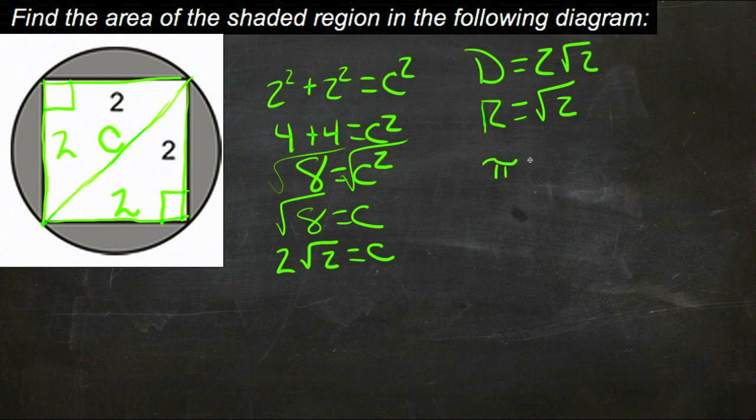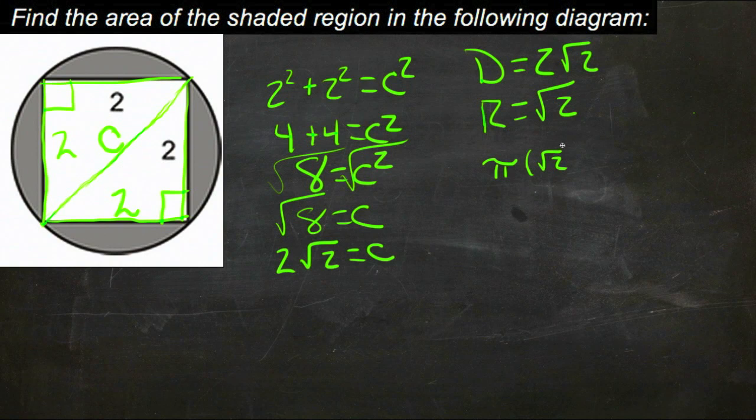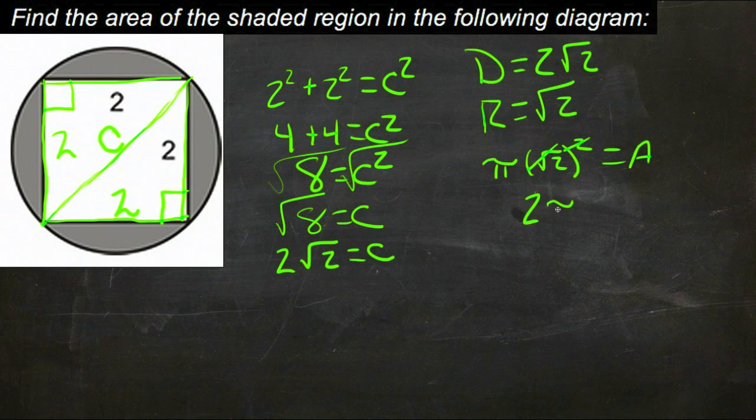So we have pi times square root of 2 squared will equal the area. Square root of 2 squared, well those are going to cancel, so we're going to have just 2 pi is equal to the area.